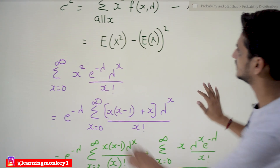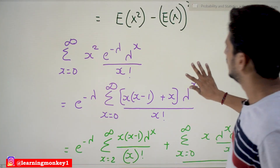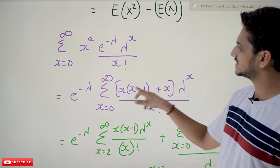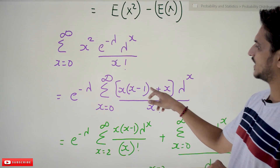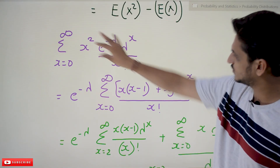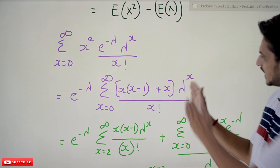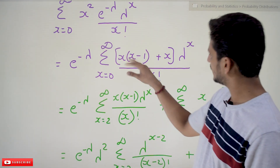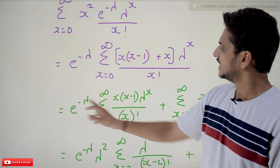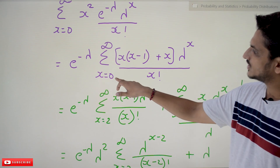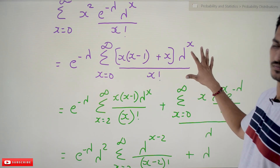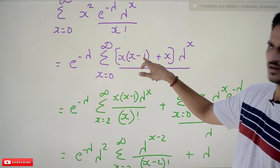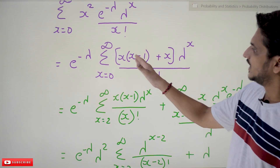We write Σ (x=0 to ∞) x² · e^(−λ) · λ^x / x!. The key trick is that x² = x(x−1) + x, since x² − x + x = x². Writing it this way lets us separate the sum into two parts. Taking e^(−λ) outside: if you substitute x=0 the term is 0, and if you substitute x=1 the x(x−1) term is also 0, so we start the first sum from x=2 to infinity.